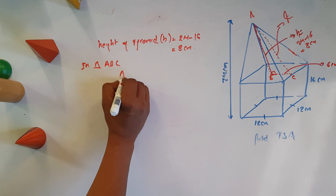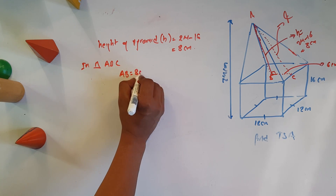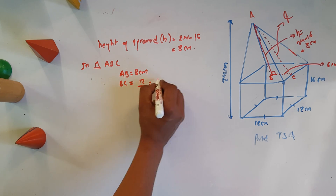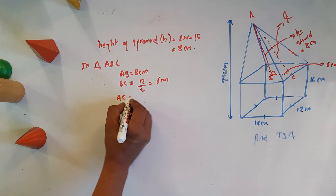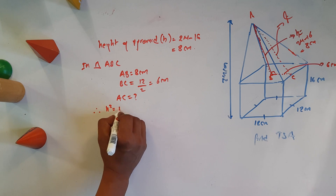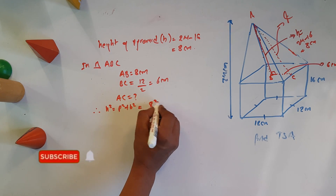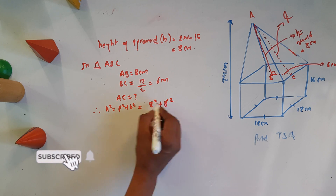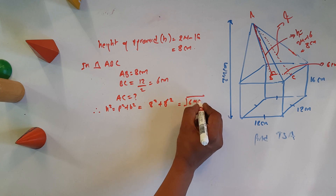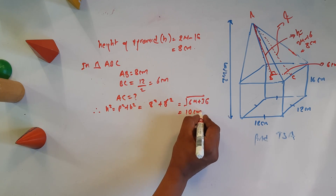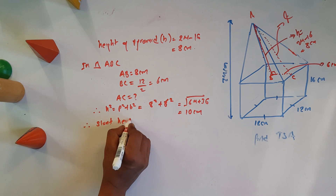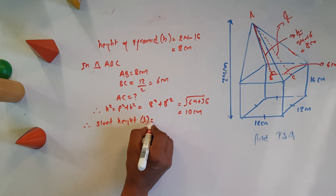AB equals 8 cm. BC equals 2L divided by 2, which equals 6 cm. AC is the hypotenuse. Using the Pythagorean theorem: h squared equals p squared plus b squared — 8 squared plus 6 squared equals the square root of 64 plus 36, which equals 10 cm.